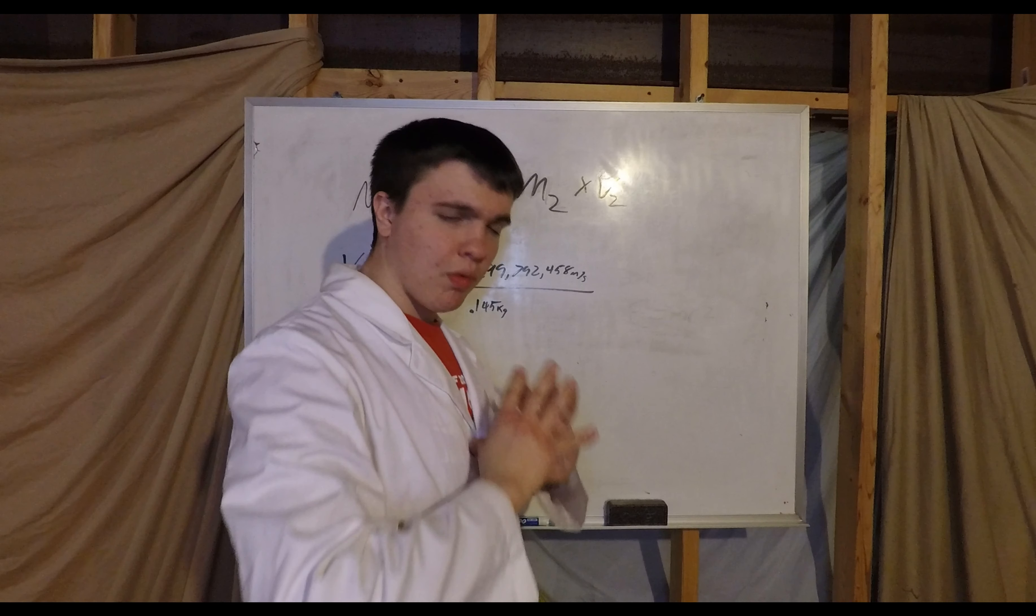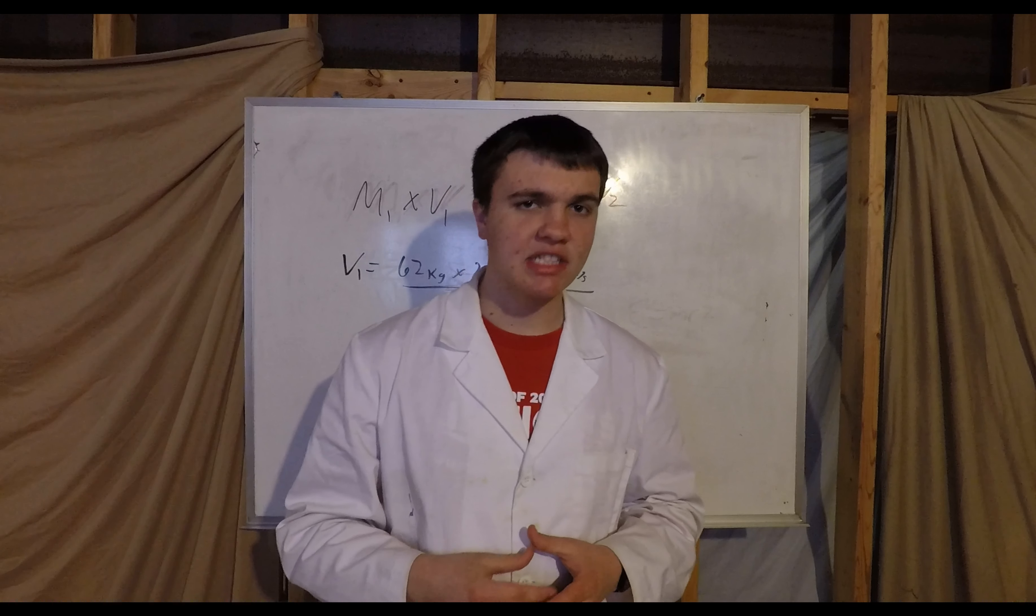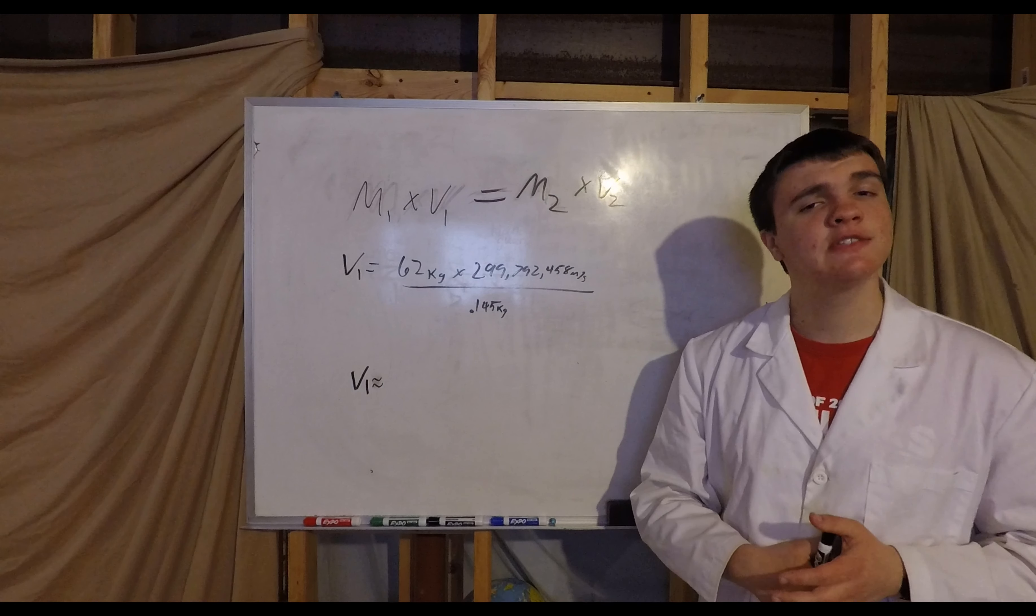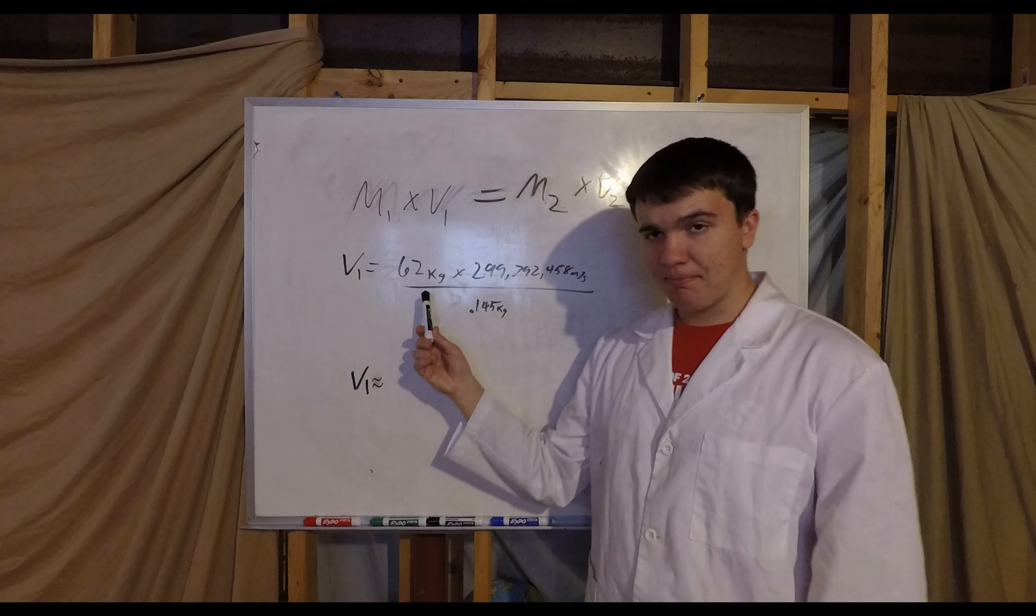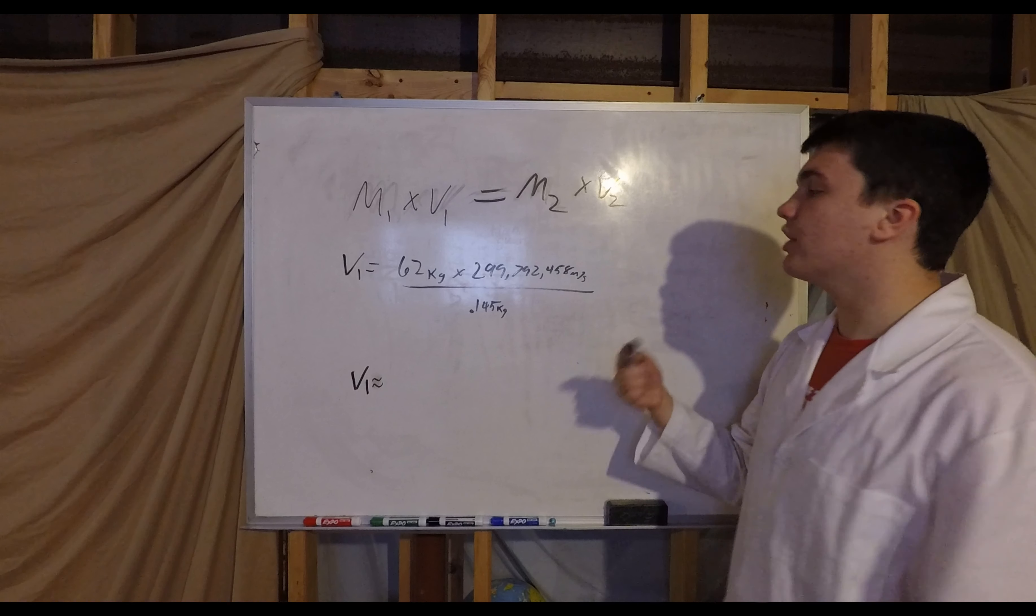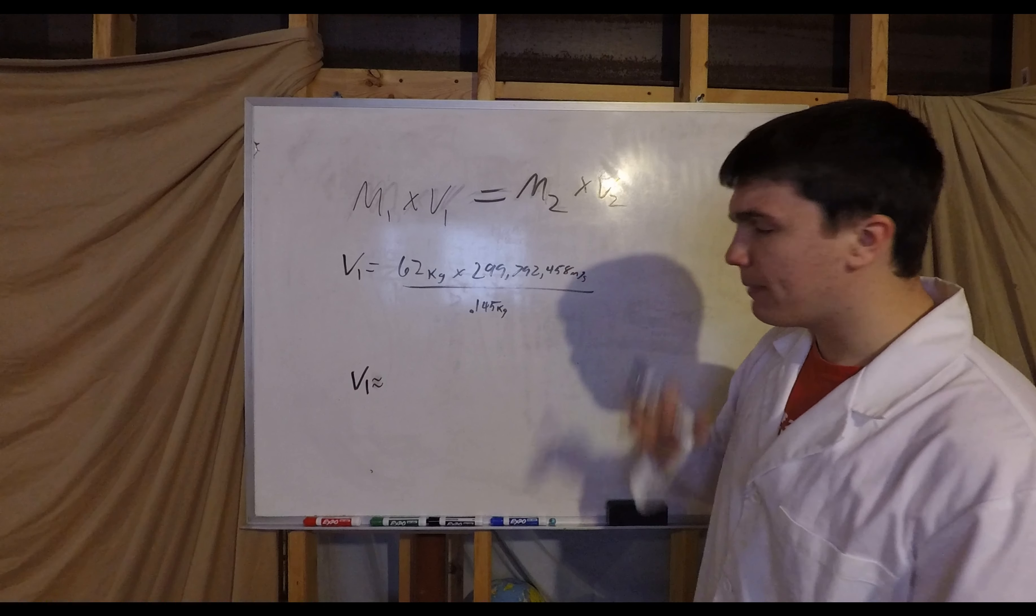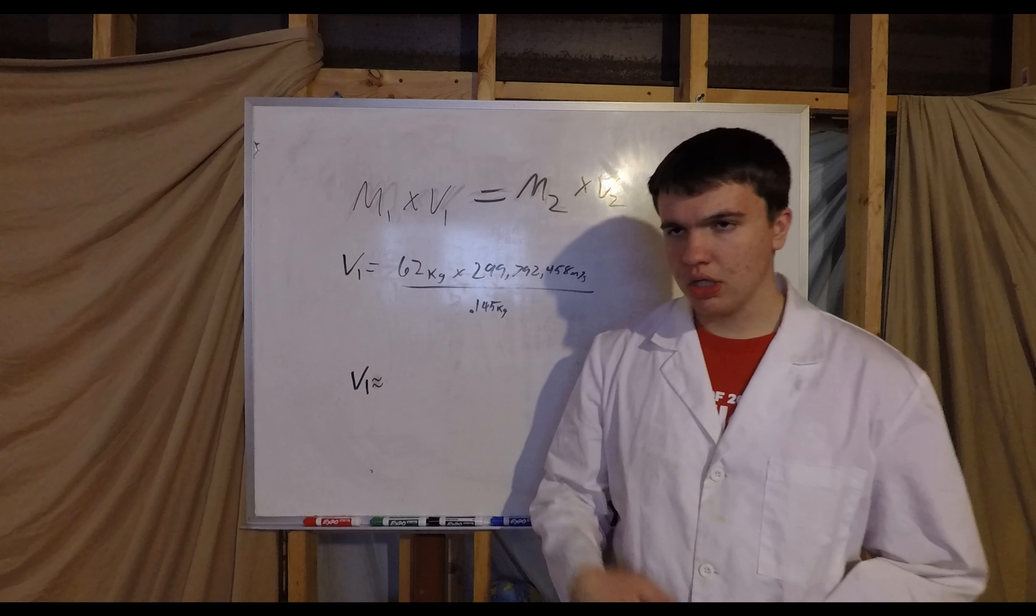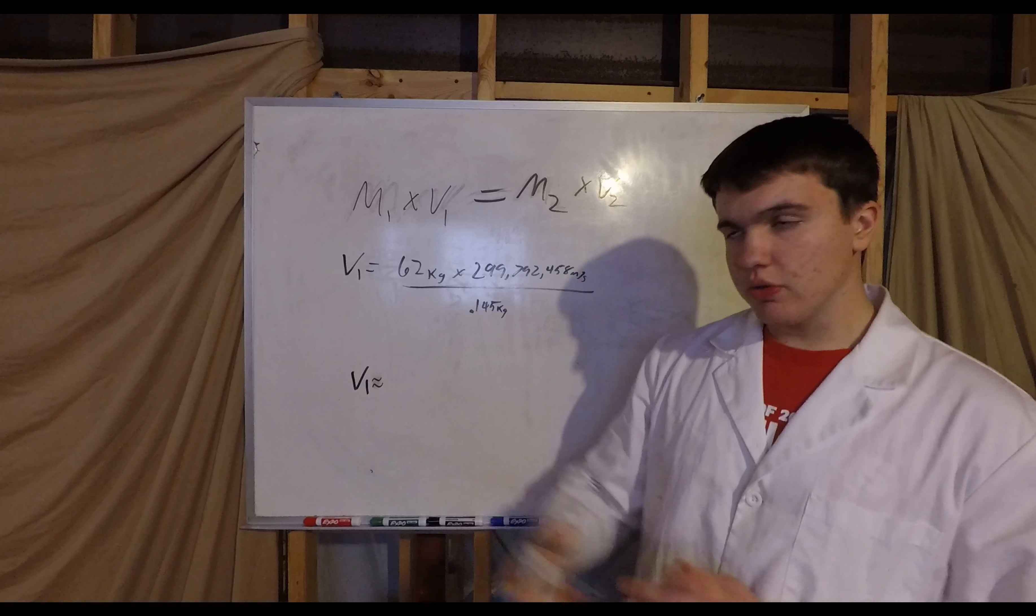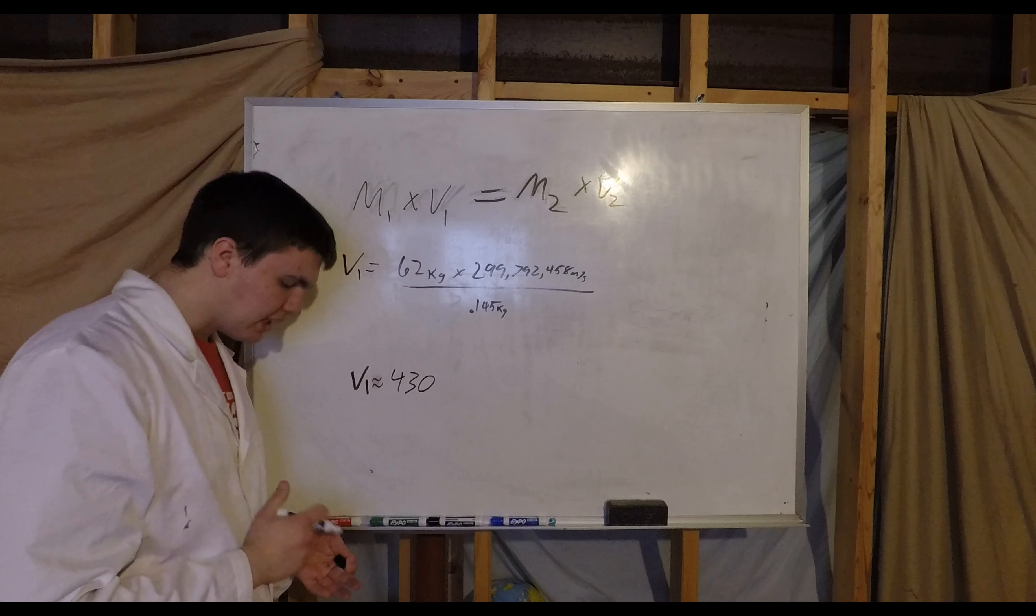Now it's time for the one you've all been waiting for. At what speed does the average mass of a person have to throw a baseball to get them to be at the speed of light? Well, let's find out. So we take the average mass of a person, 62 kilograms, times the speed of light, which is 299,792,458 meters per second, divided by the mass of the baseball. We're going to express this in terms of speed of light. So if you just throw the speed of light out of the equation, you get roughly 430 times c, which is the speed of light.